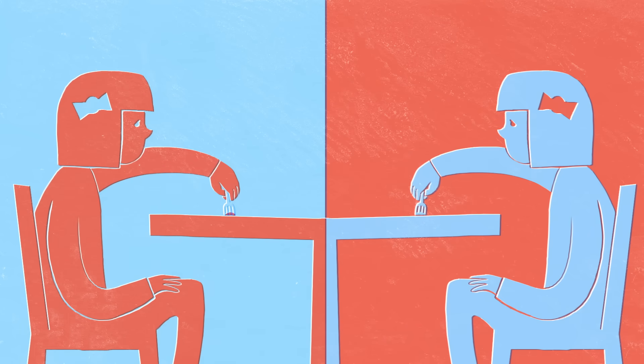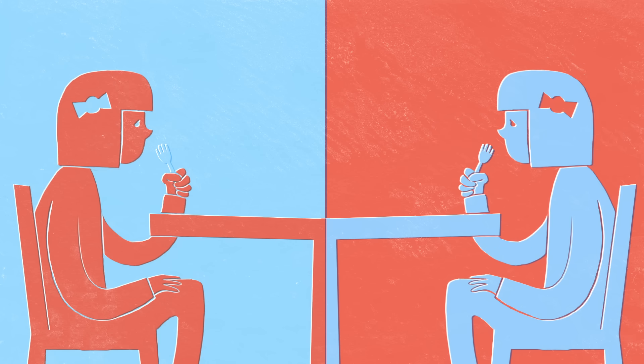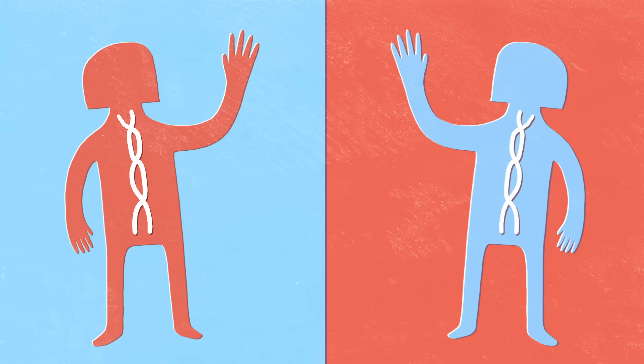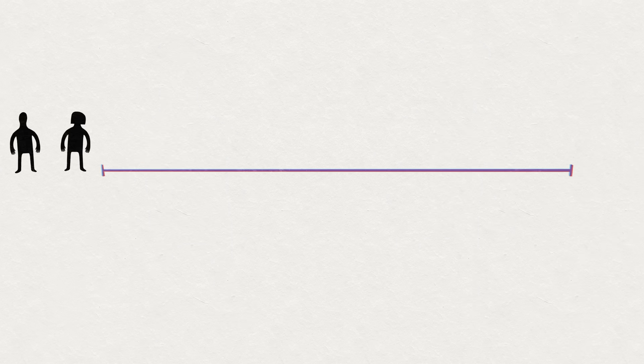Identical twins who have the same genes can have different dominant hands. In fact, this happens as often as it does with any other sibling pair. But the chances of being right or left-handed are determined by the handedness of your parents, in surprisingly consistent ratios.